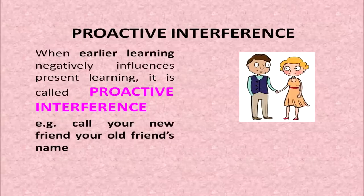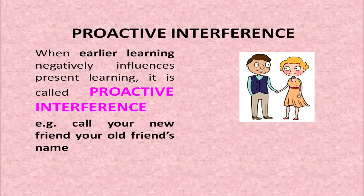There are two types of interference: proactive interference and retroactive interference. When earlier learning negatively influences present learning, it is called proactive interference. For example, you might call your new friends by your old friend's name — whatever you learned in the past is influencing the present.